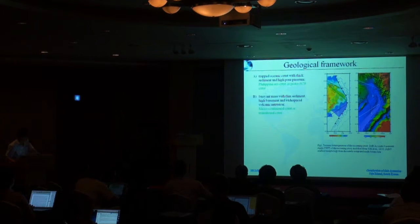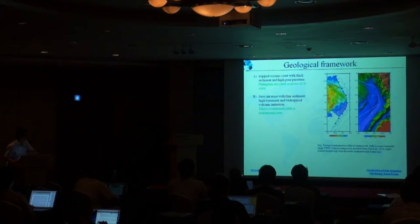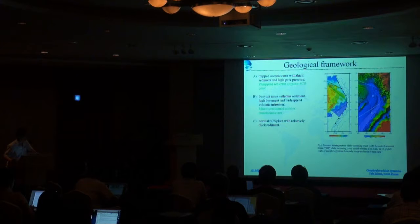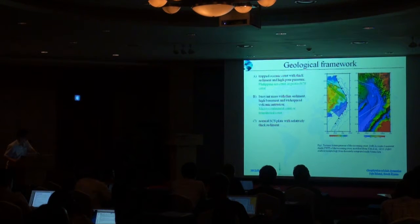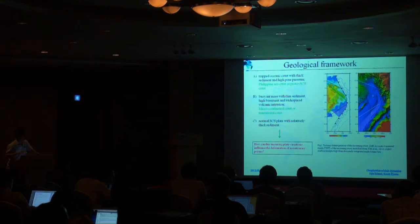The middle part of this area is a buoyant mass with thin sediment, high basement, and also widespread volcanic intrusions. The nature of this part is a micro-continental crust or maybe a transitional crust. We will talk about this controversy later. The south part of this area is a normal South China Sea plate with relatively thick sediment. This division indicates that the incoming plate is different from north to south, which leads to the core question of my talk: how do these incoming plate variations influence the deformation of the accretionary wedges?